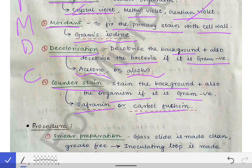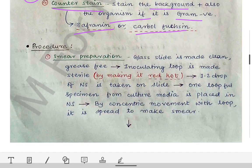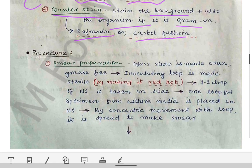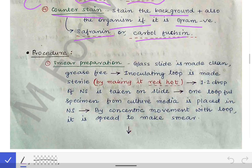Now let's start the procedure of Gram staining. First, we make a smear. We take a glass slide and clean it, making it grease-free by heating it over the flame on both sides. In our college at NRSMCH, we used to take the glass slide and heat it on both sides to make it grease-free.